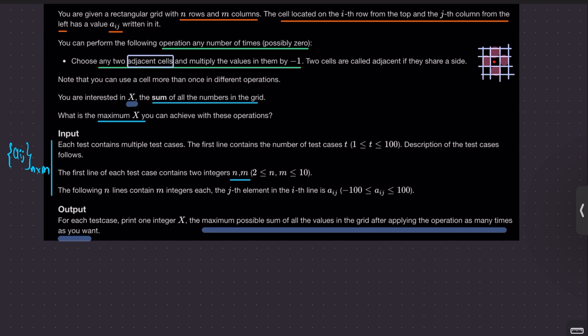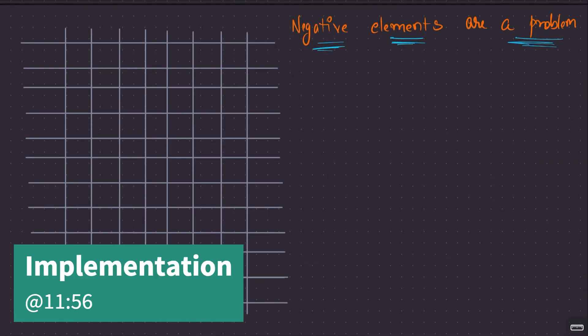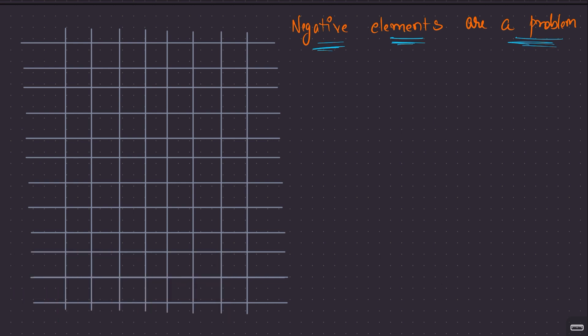One thing is clear: if you don't have negative elements — that is, the matrix is only made up of non-negative values — you can simply sum all the values and that will be your answer. Negative elements will only bring down the sum. So if there are only non-negative elements, your answer is simply the sum of all elements. But if negative elements are present, they reduce x, and you want to get rid of them using the one operation you have.